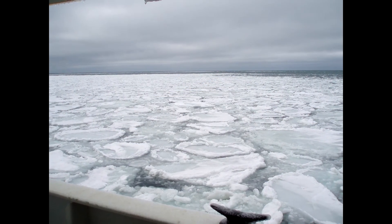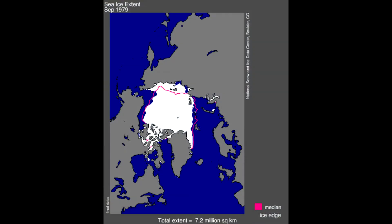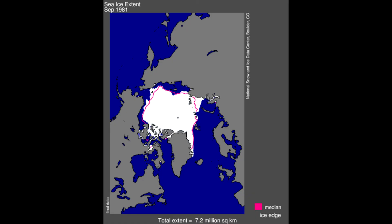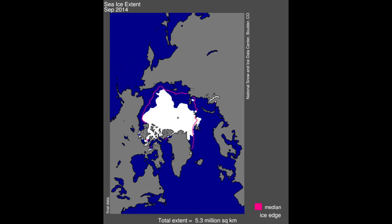Sea ice in the Arctic is also much smaller today than even a few years ago. In 1979, this is what the ice in the Arctic looked like in September — that's the month when the ice cover is the smallest. Now here it is in 1980, 1981. Now look at the same ice in September of 2016, 2015, 2014. September of 2012 was the smallest ice extent ever recorded in the Arctic. It's quite a difference, right? That's what has scientists concerned.